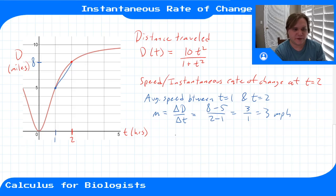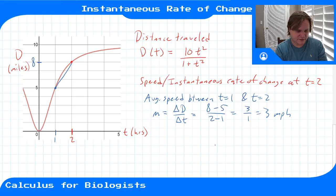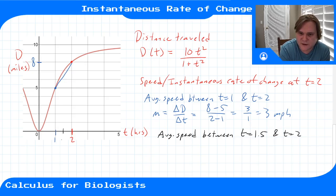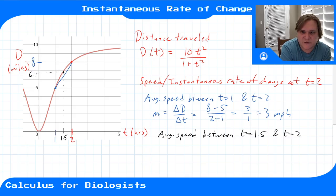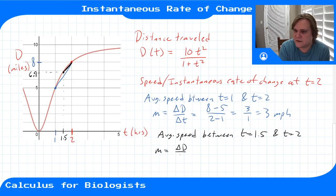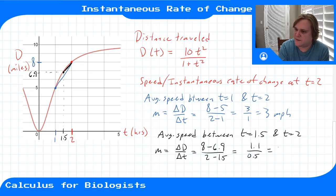I want to know the speed exactly at time two, so let's make a smaller interval. Now let's look at the average speed between t = 1.5 and t = 2. At t = 1.5, my distance traveled is about 6.9. The slope of this secant line gives the average rate of change: Δd/Δt = (8 − 6.9) / (2 − 1.5), that's 1.1 miles over half an hour, so about 2.2 miles per hour over this smaller interval — slower than over the larger interval.